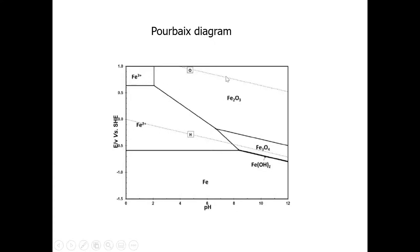There are various features in this diagram you need to know about. The base metal — pure iron, Fe — exists in a specific region here. This region represents where you would have pure metallic iron as a stable phase. The pH range shown is between zero and 12, which covers most of the practically relevant range. On the pH scale, pH 7 — right in the middle — represents the neutral pH of plain ordinary water.